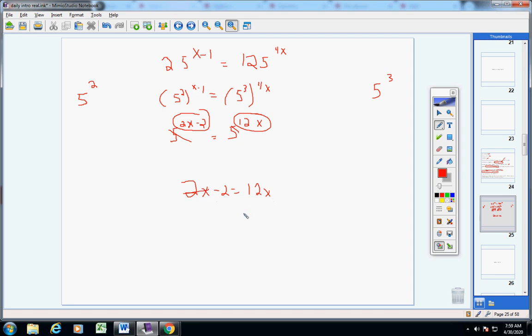And we know how to solve that. Bring your 2x over. Make it negative. You're left with negative 2 equals 10x. Divide both sides by 10. And a negative over a positive is negative. And, of course, your 10s over here cancel. And there's your answer, all right?